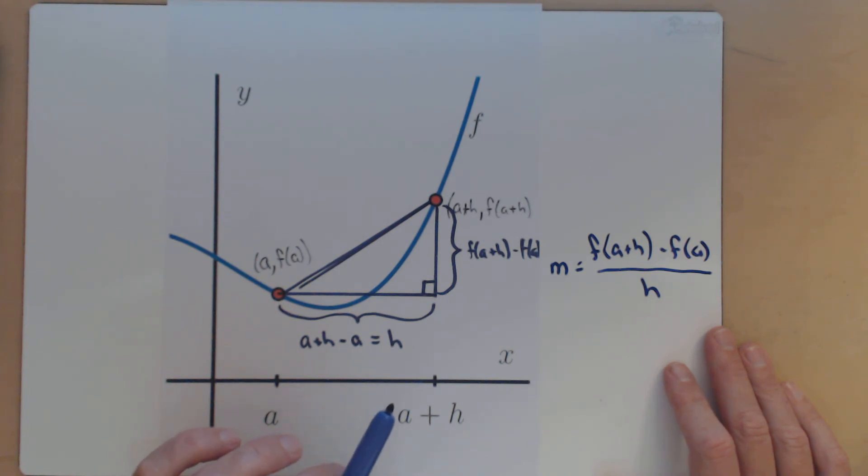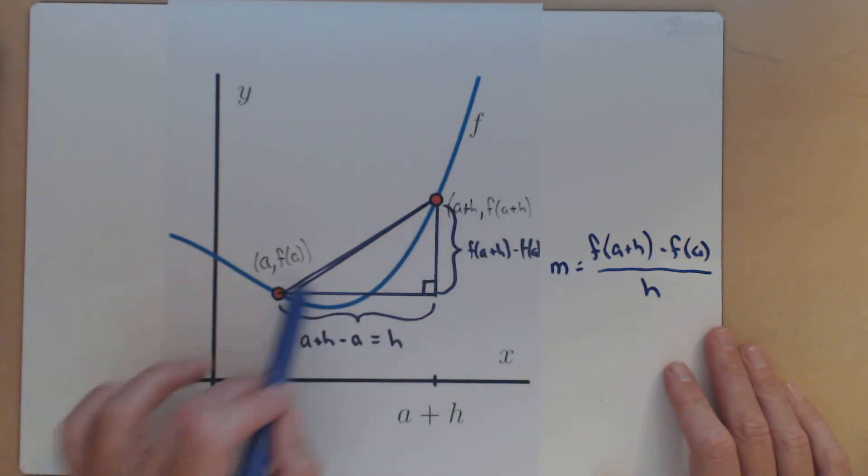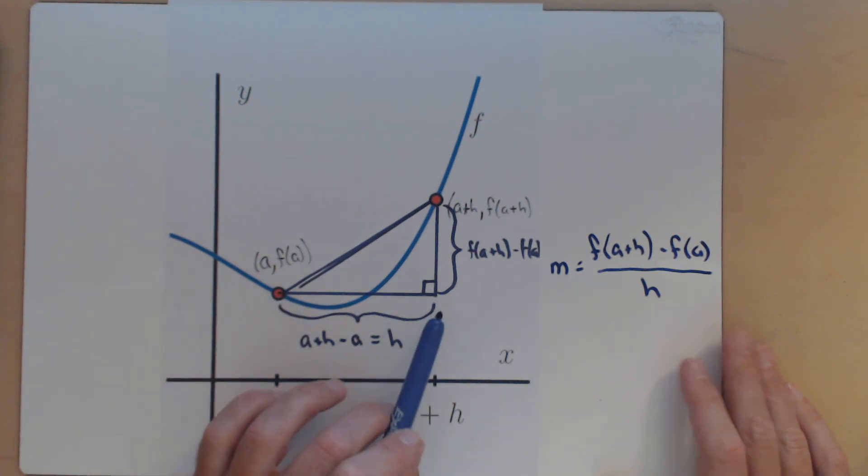So finally, we have to give a meaningful sentence that explains how the average rate of change of the function on a given interval and the slope of the related line are connected. Well, the average rate of change between a and a plus h is equal to the slope of the line that connects a comma f of a and a plus h comma f of a plus h. So the slope of this line here that we drew in is the average rate of change between a and a plus h.